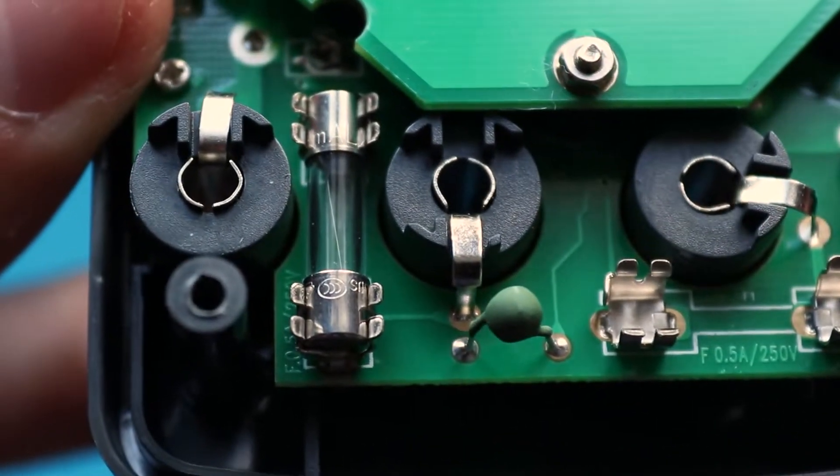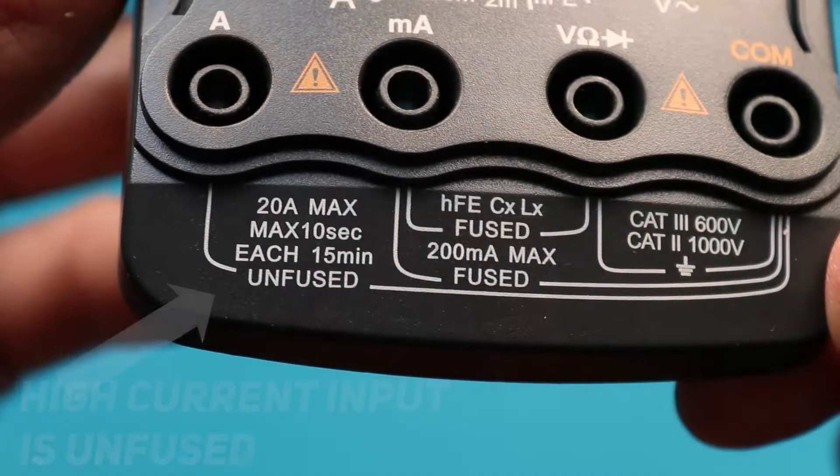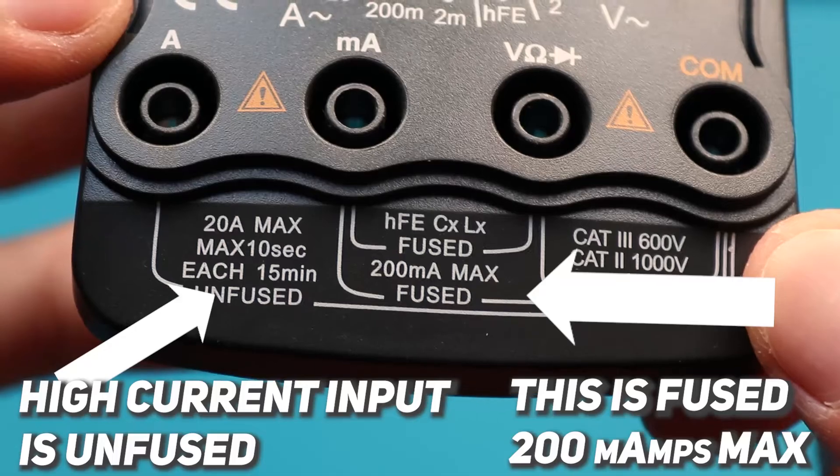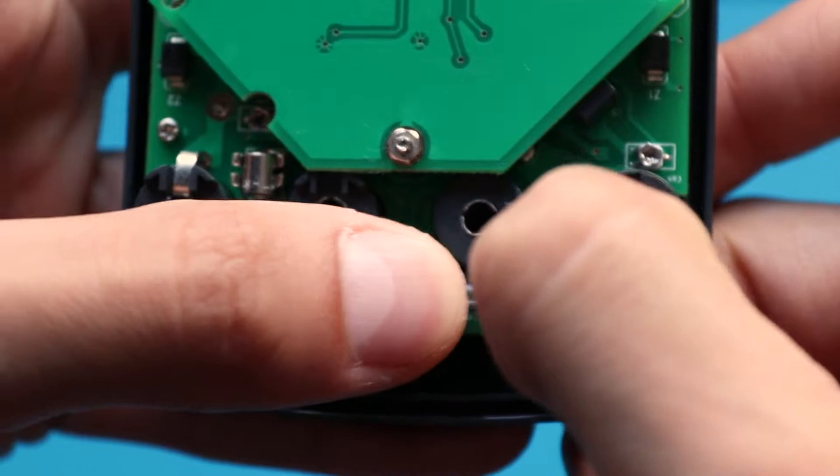For example, this multimeter has two 0.5A fuses. And if you can't find any marking, you can look at the maximum multimeter channel current that is written here and pick the closest fuse value. But the fuse max current must be higher than the maximum channel input current, so take it into account.